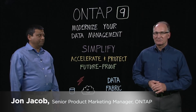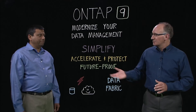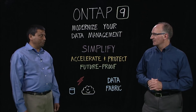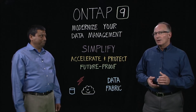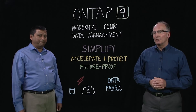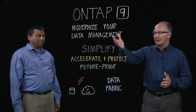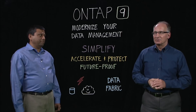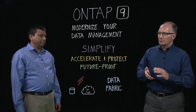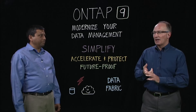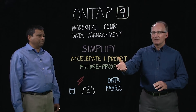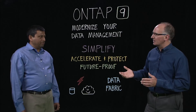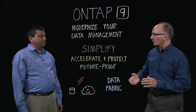Hi, I'm John Jacob, Marketing Manager for ONTAP here at NetApp. Joining me today is Jay Subramanian, VP of Product Management for ONTAP. What we'd like to do today is cover the high level overview of ONTAP 9 data management software and how it can help to modernize your data management. There are three key ways that it does that: simplify, accelerate and protect, and future proof. Jay, let's start off with simplify — what are some of the key innovations we've done to enable that with our customers?